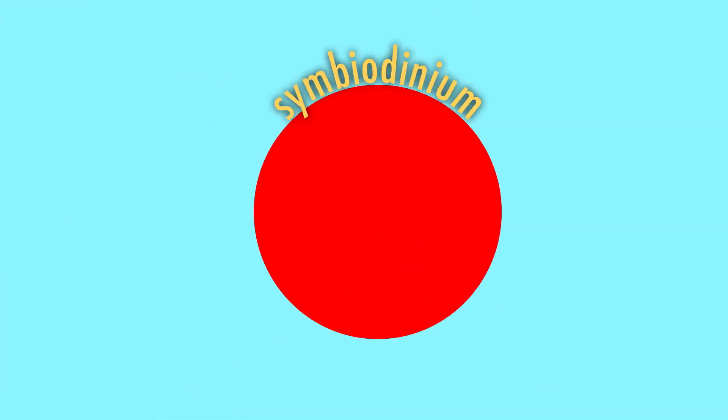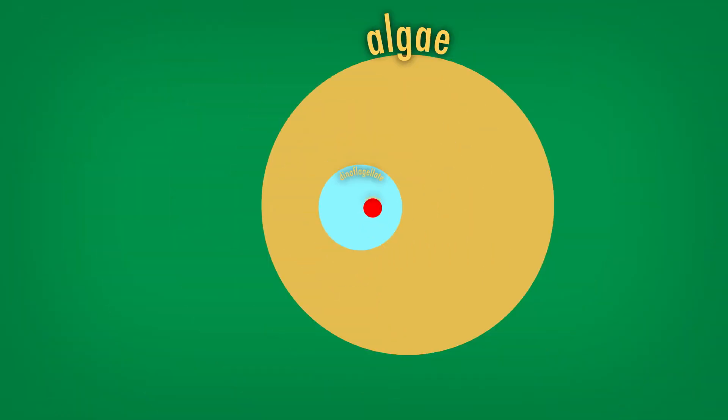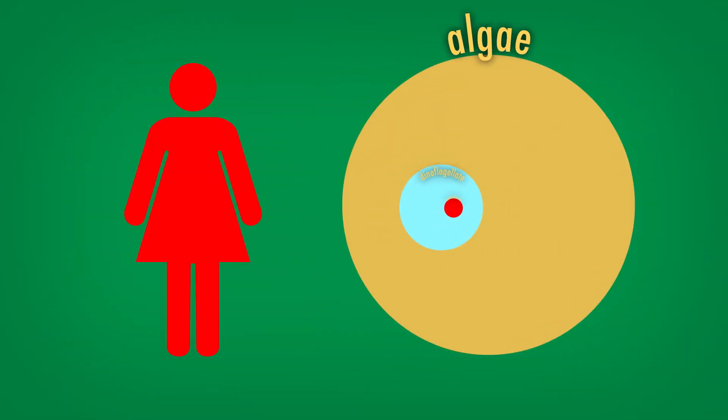That thing living inside the coral is called a symbiodinium. Symbiodinium are a type of dinoflagellate, and dinoflagellates, of course, are a type of algae. So instead of looking like this, they actually look more like this.